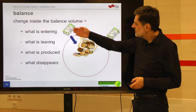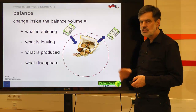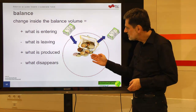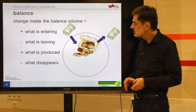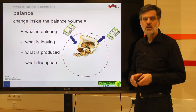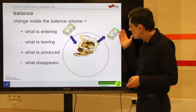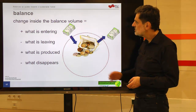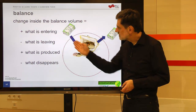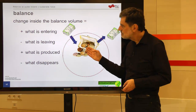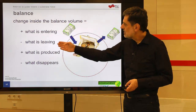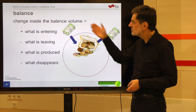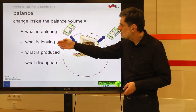Things can come in and things can leave the balance boundary. Money can come in, increasing the amount inside the purse, or it can leave because you pay for something, decreasing the amount inside. The change inside is what is entering — added to what was there before — minus what is leaving, which is subtracted from what was there before.